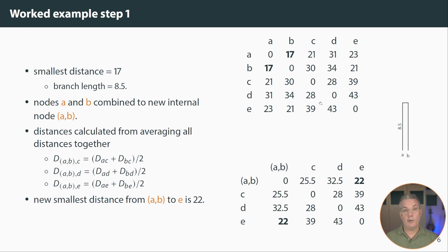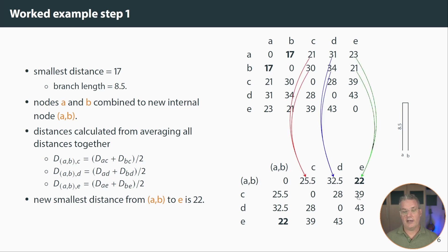Now we have to calculate a smaller distance matrix. The new entry AB to C is the combination of A to C and B to C; AB to D is the combination of A to D and B to D; and AB to E is the combination of A to E and B to E. We take these entries, average them, and get a new matrix. In this new matrix, the smallest entry is 22, between the new cluster AB and sequence E, so that is the next thing we're going to combine.